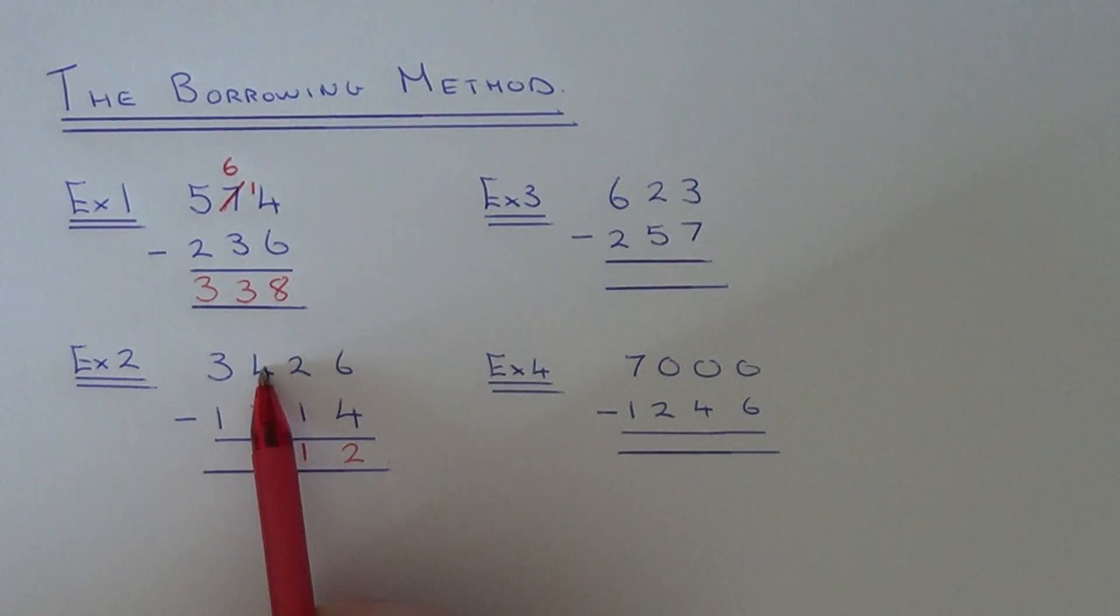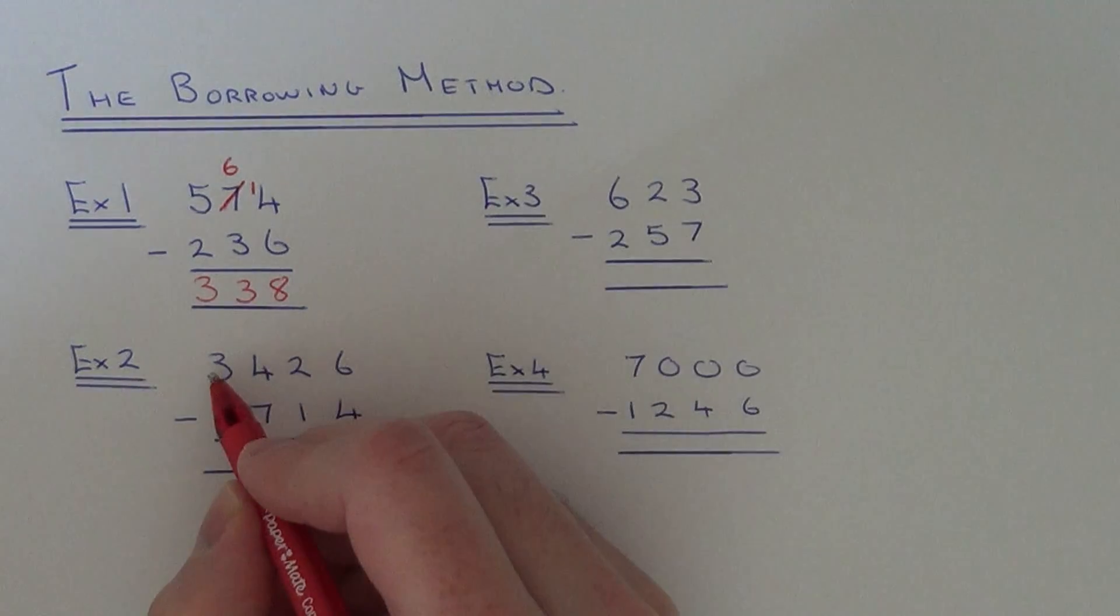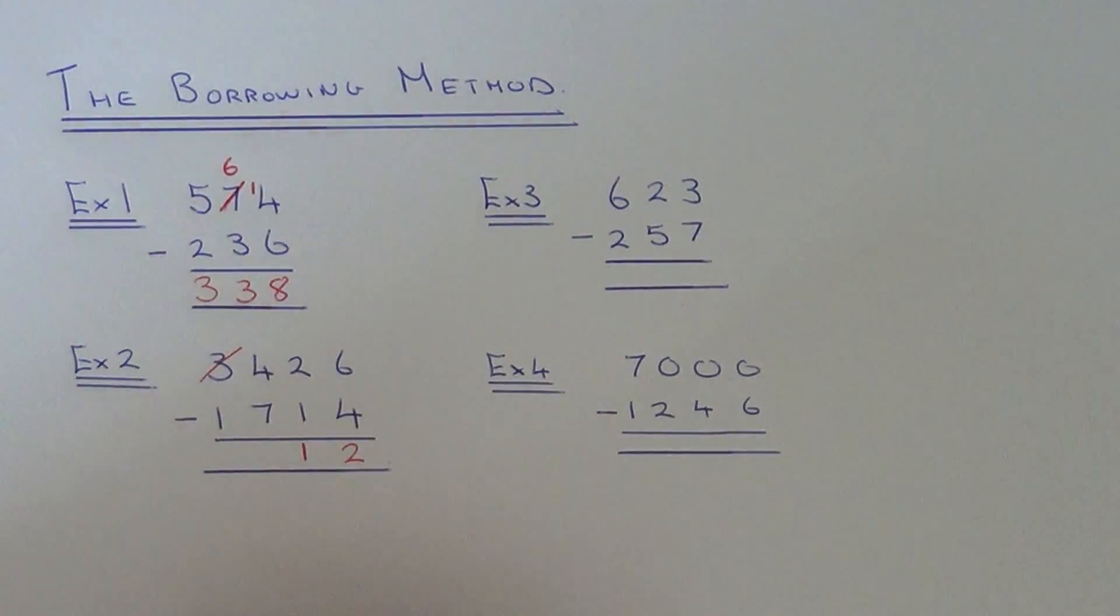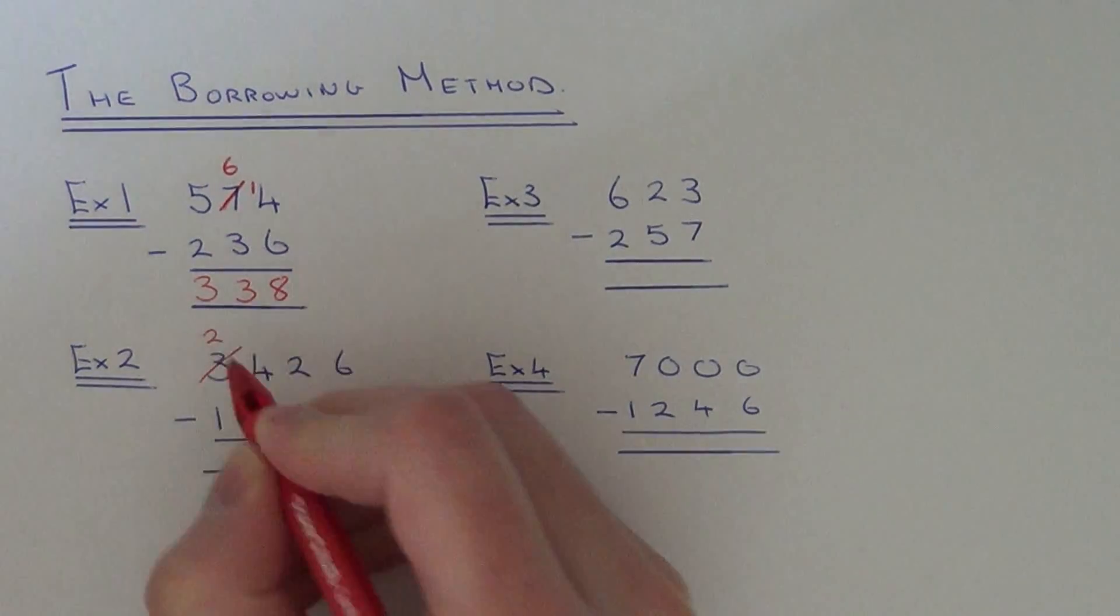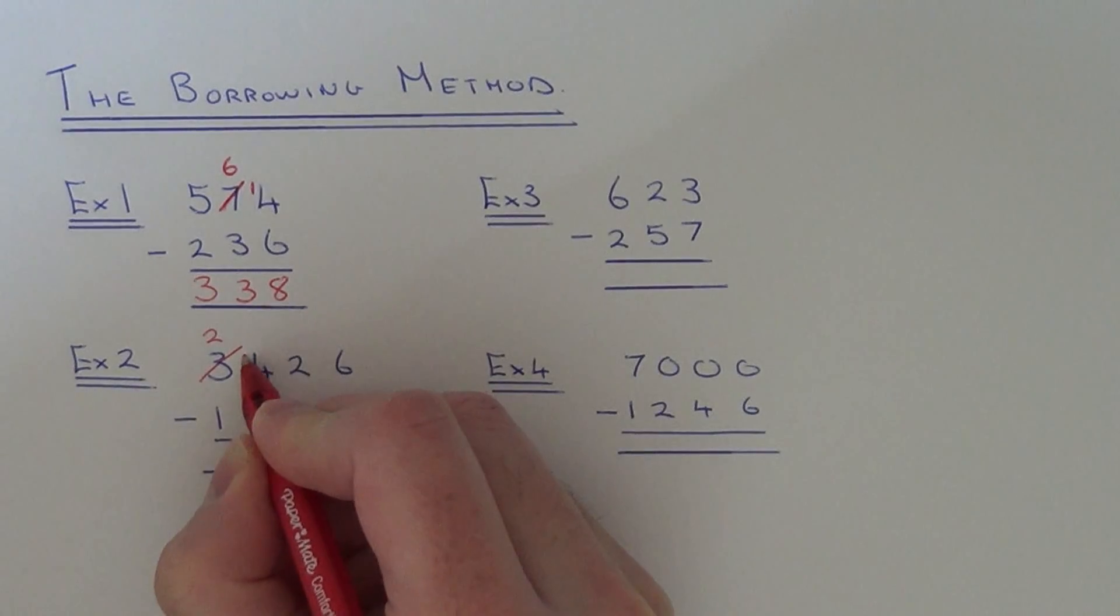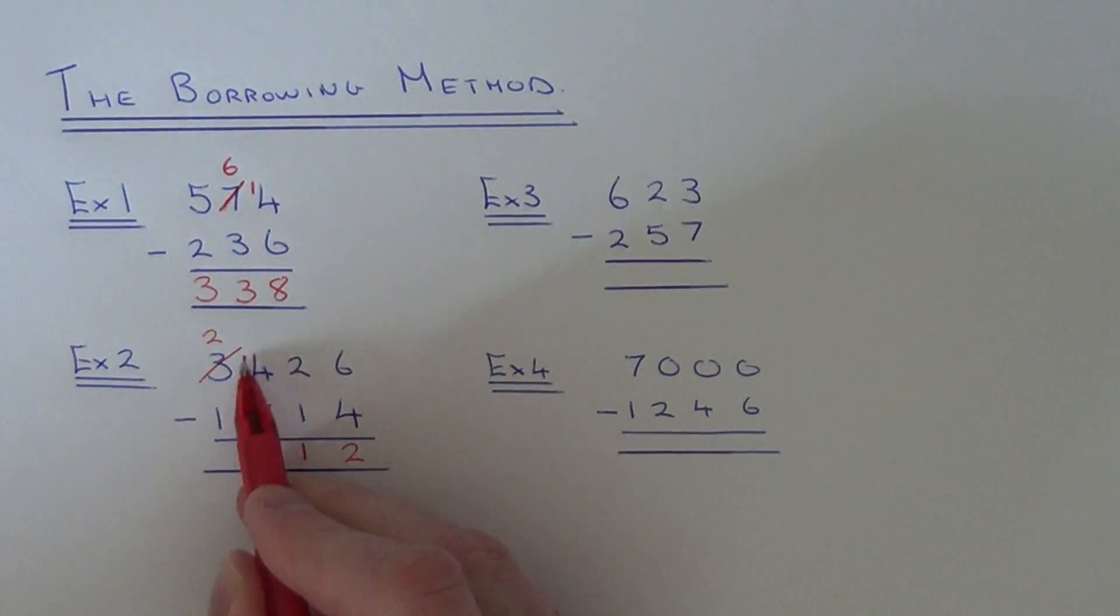The next column you've got to be careful with because you can't do 4 take away 7. That again will give you a negative number, so we need to borrow. Borrow off the 3, make that a 2, and pass the 1 that you have borrowed and put it in the 4 to make 14. So 14 take away 7 is 7, and then 2 take away 1 is 1.